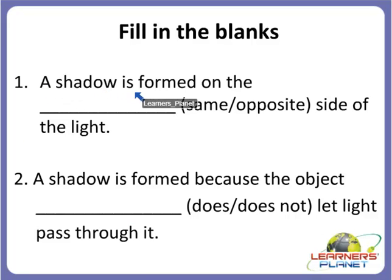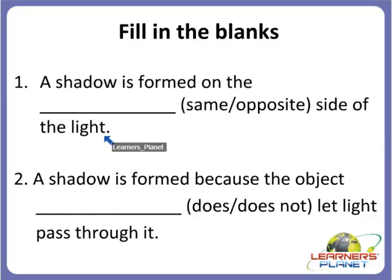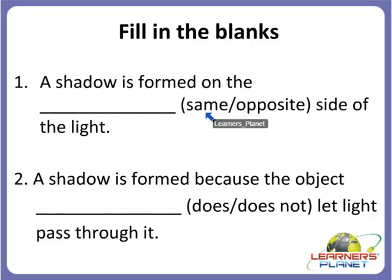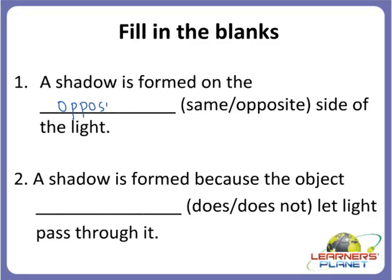A shadow is formed on the blank side of the light. Where is a shadow formed? Is it formed on the same side of the light or the opposite side of the light? A shadow is formed on the opposite side of the light.